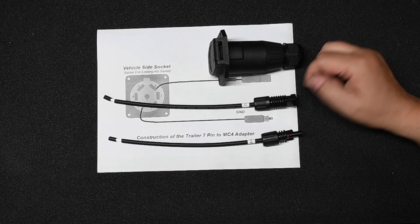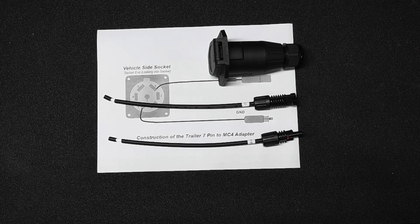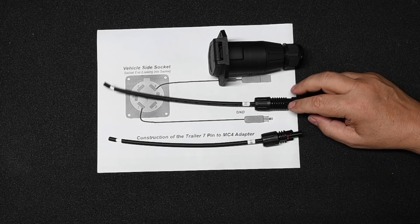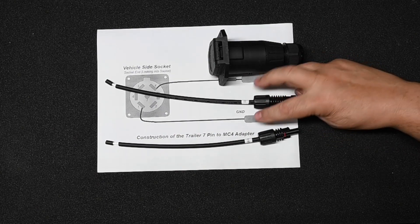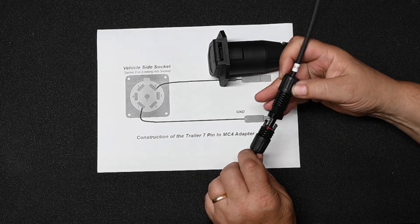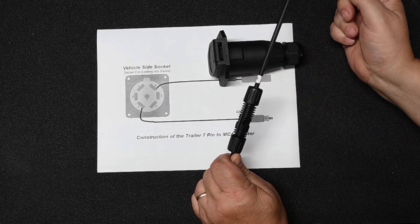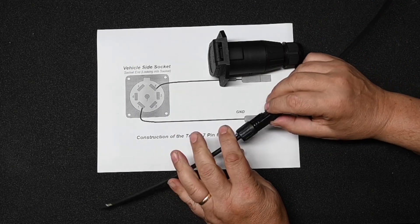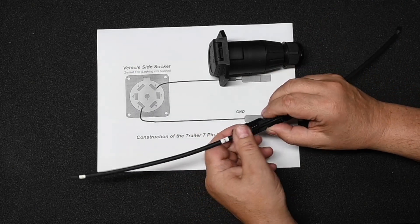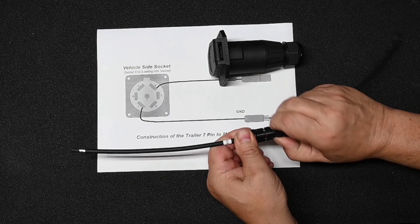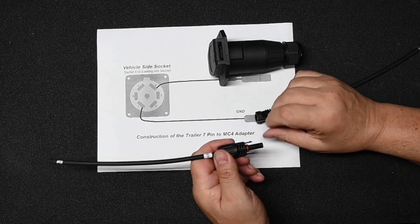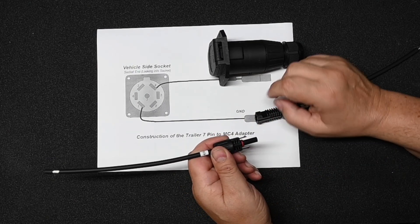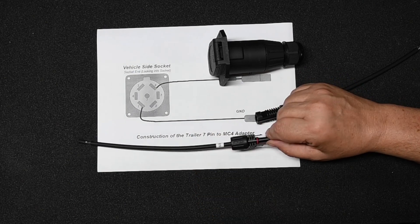So the first step is identifying the two pigtails. You'll notice you have a male pigtail and a female pigtail, and actually they will connect together. They disconnect by depressing on these two little tabs and then pulling this one out. It can be a little difficult because there's an O-ring here, and this is really not that great of a design.